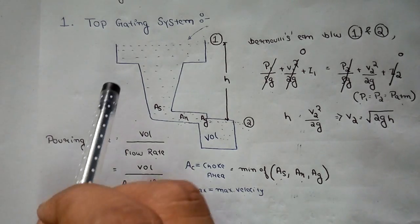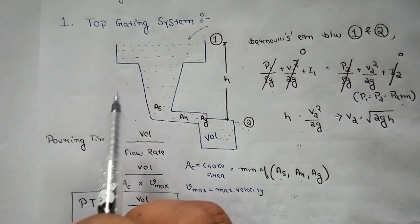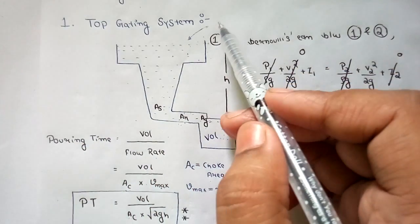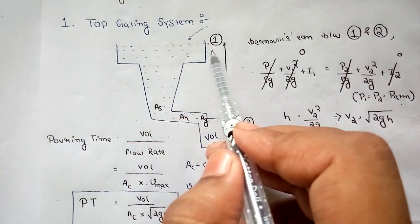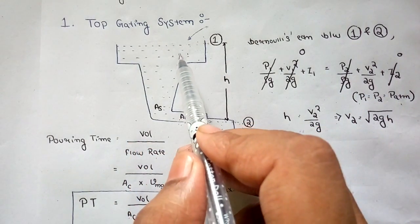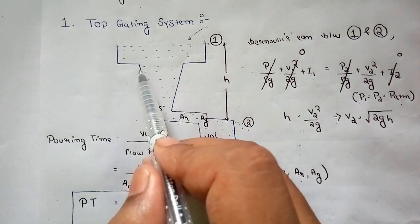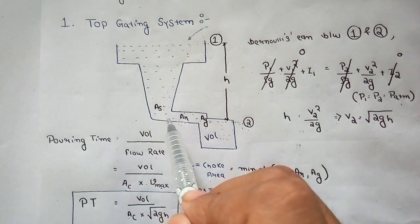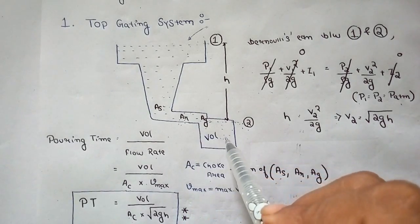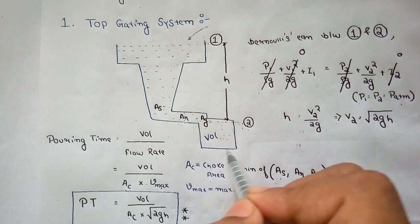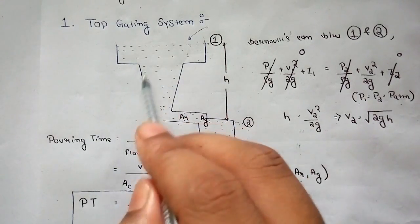Here is a diagram of a total casting process. Whenever the molten metal is poured into the pouring basin, from the pouring basin the molten metal moves into the sprue. From the sprue it moves through the runner, and through the ingate it passes into the mold cavity. This is the total process of casting.